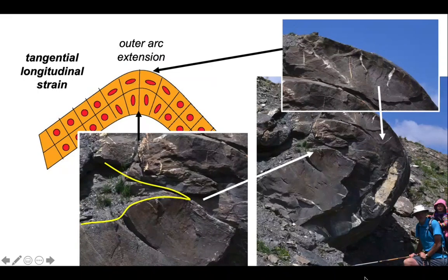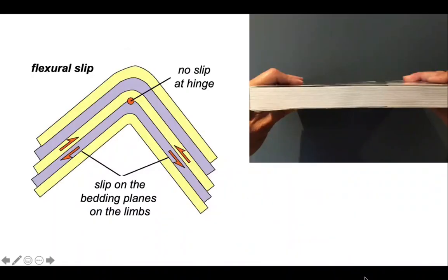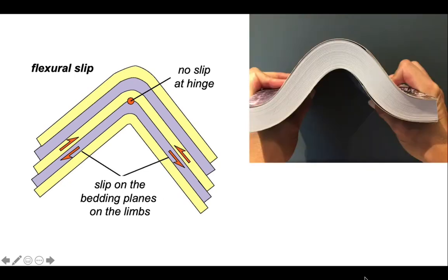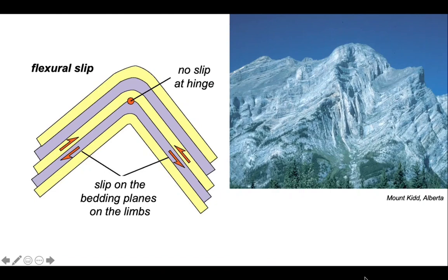But this isn't the only way in which rocks can accommodate folding. Another way is through flexural slip. And this time there's no slip at the hinge, and all the action happens on the bedding planes. And an analogy of this is a paperback book. We can see that in order to accommodate the fold, the layers have slipped. And so this behavior is something you'd expect to see in well-layered rocks, such as here in the Canadian Cordillera, where these interbedded limestones are believed to have deformed by interbed slip.